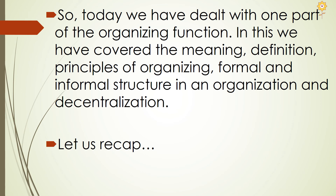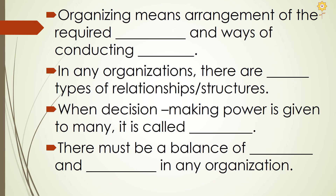Let us recap and see what we have done so far. Organizing means arrangement of the required resources and ways of conducting activities. In any organization, there are two types of relationships or structures. When decision-making power is given to many, it is called decentralization. There must be a balance of authority and responsibility in any organization. Hopefully you have got the right answers.